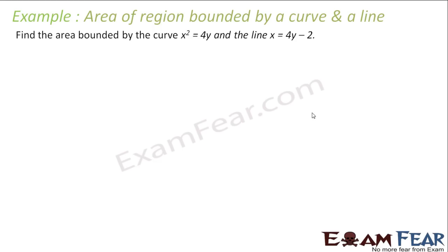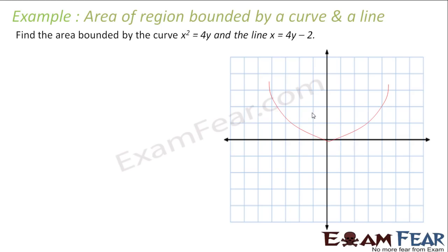So let us draw this first. We have the curve, and let us draw the line — the line has a slope of 1 by 4, positive. So I am looking for the area bounded by the curve and this line.